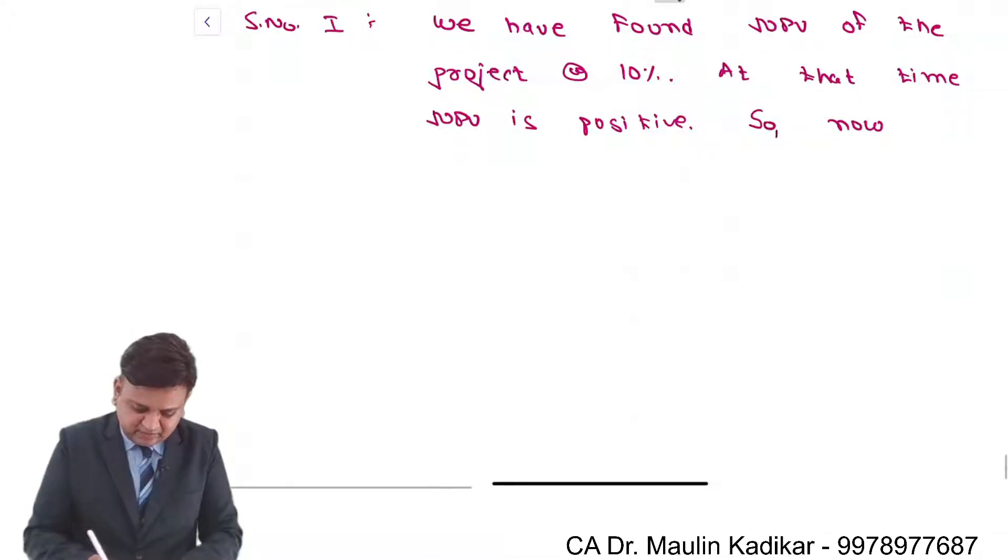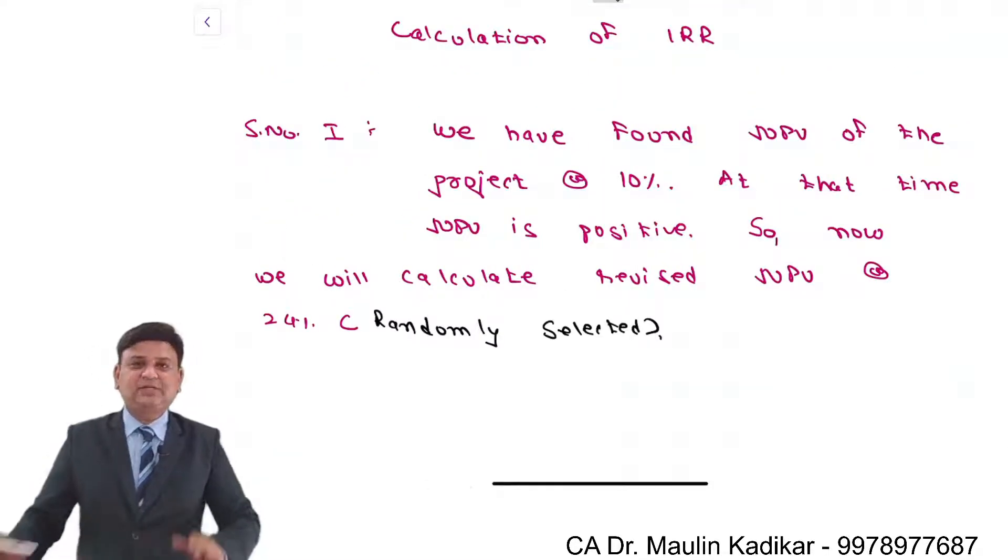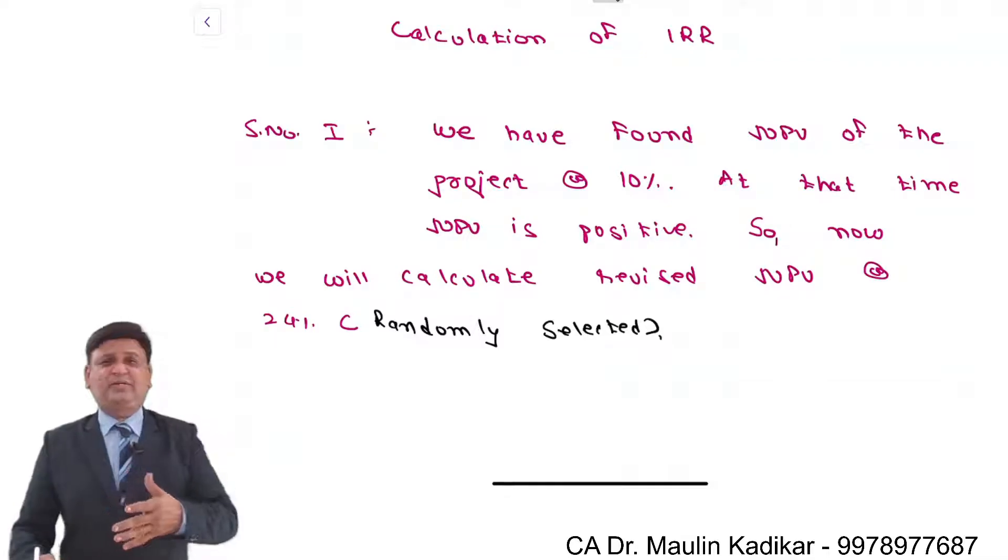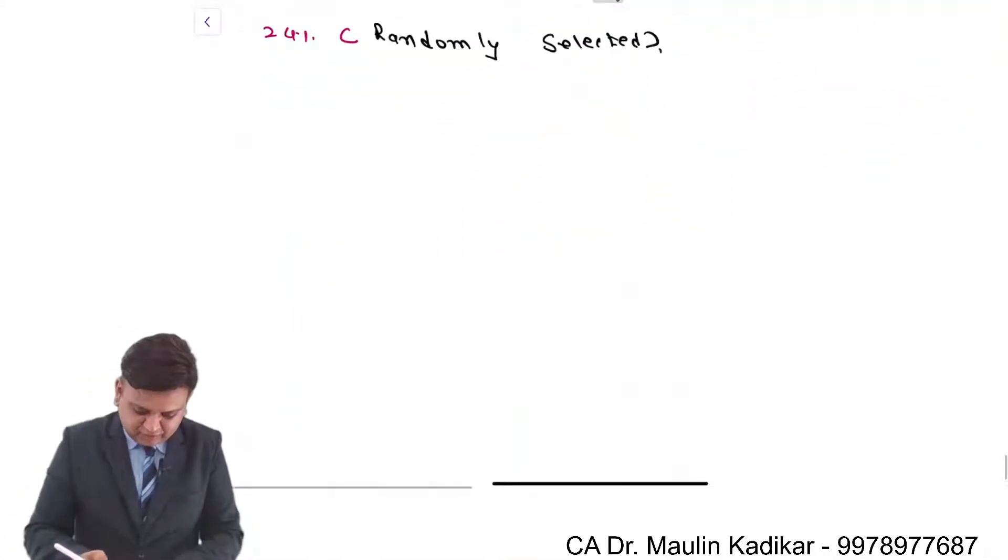So now we will calculate revised NPV at the rate 24%. Randomly selected. Now from 10% you can take 15%, you can take 20%, you can take even 50%. Anything you can take, but of course more than 10%. Because at 10% NPV is already positive. I am taking randomly 24%. For that there is no reason.